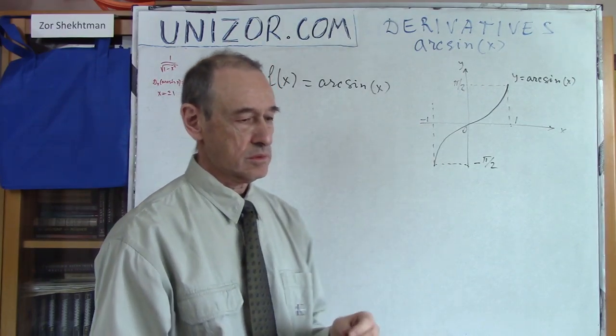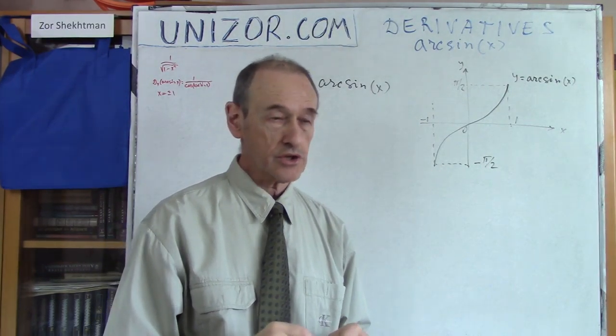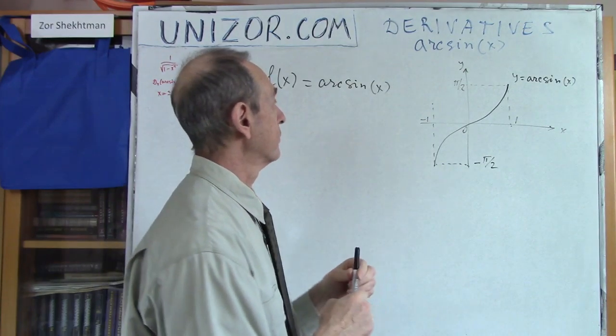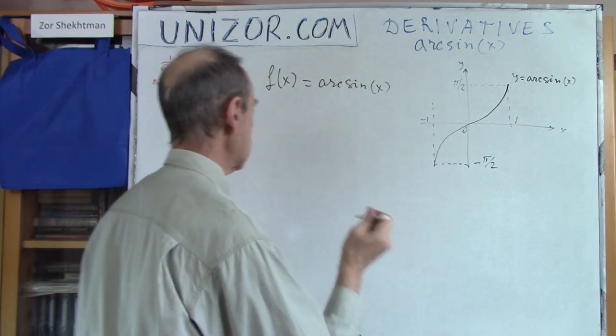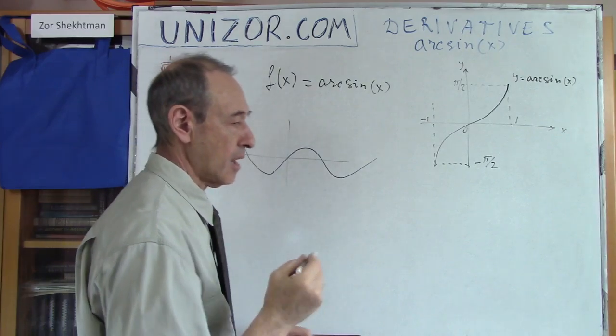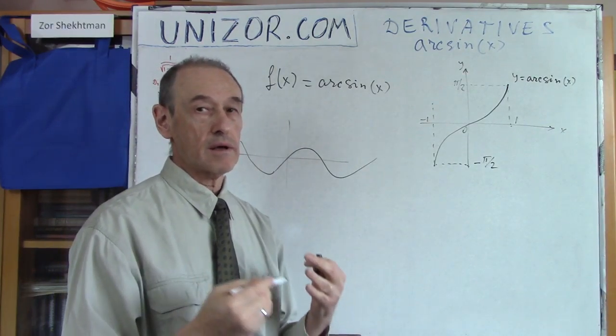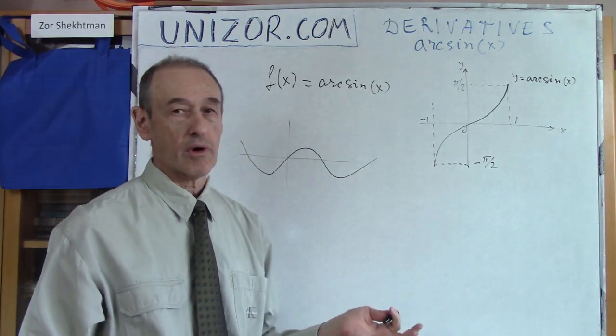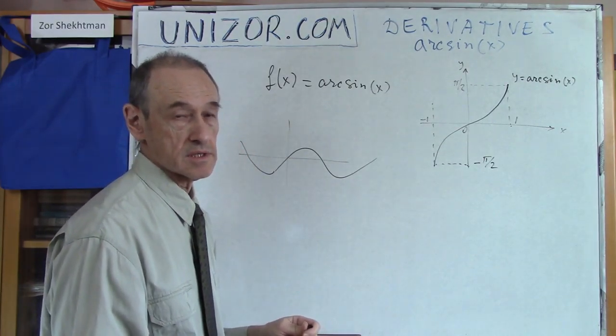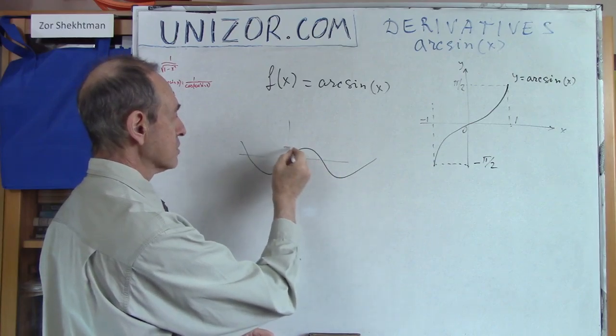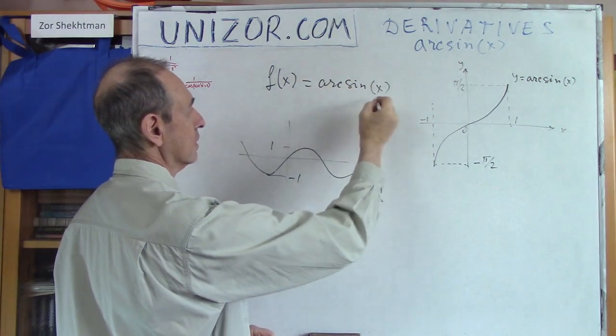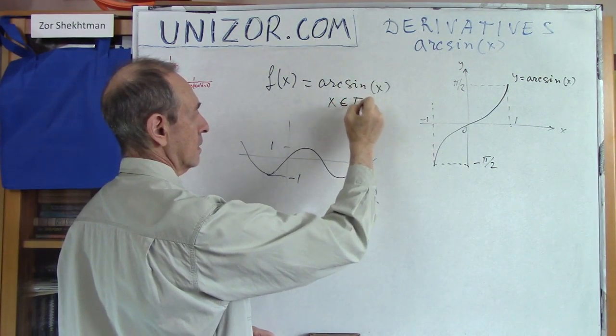Before going into the detailed calculation, let's talk a little bit about the function itself. The function is the reverse of the sine, obviously. The sine has a graph as we know, something like this. And obviously, there is no real function which is defined for any argument. First of all, what is the domain of this inverse function? Well, the sine can take values from minus 1 to 1. So basically, this function has domain from minus 1 to 1.